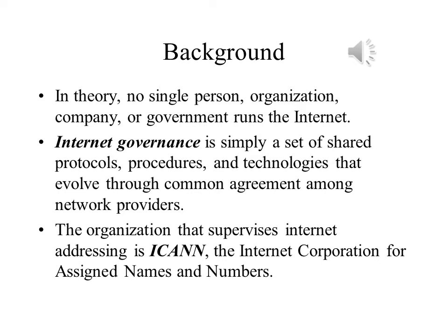These have come about as a result of common agreements between network providers. The single closest thing to governing responsibility for the Internet is ICANN, the Internet Corporation for Assigned Names and Numbers. ICANN is responsible for assigning domain names, which is how people know the sites on the Internet, and IP addresses. IP, or Inter-Network Protocol addresses, are the numbers that serve as addresses that the Internet uses to route data traffic through the Internet.